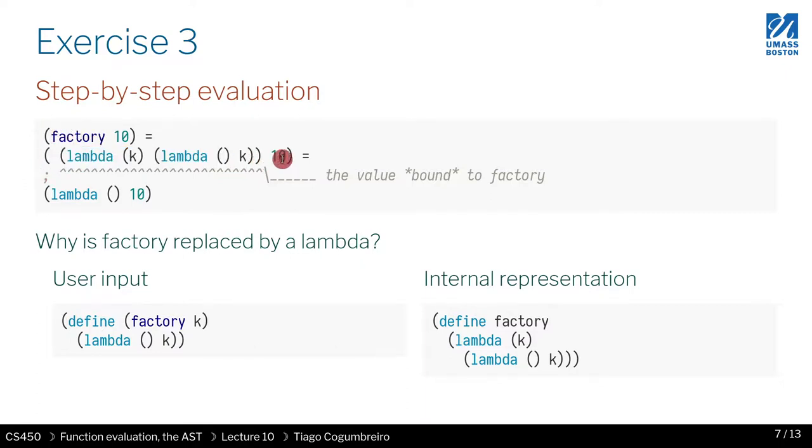Second thing we do, we apply function to argument. In this case, argument is 10. What we do is we take the body of the lambda, which in this case is another lambda, and we find and replace k by 10. We're going to find and replace k in the body of the function. It's going to be this lambda where we replace k by 10. That's why you get lambda with a 10.